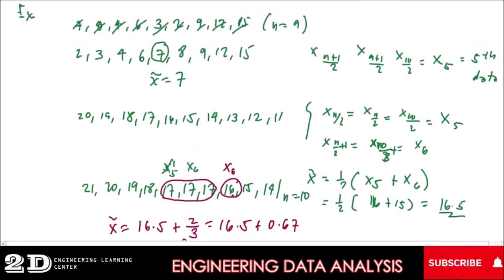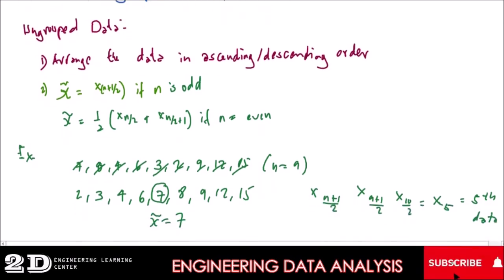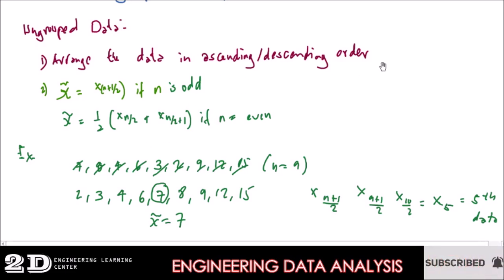For the median, it is somewhat the black sheep of the measures of central tendency because it is much more complicated than the mean and the mode. For the median of ungrouped data, we first need to consider whether the number of data is odd or even. If it is odd, the number in the middle — after arranging data in ascending or descending order — will be your median.